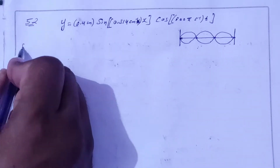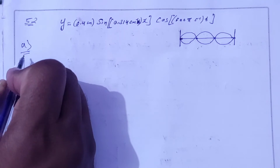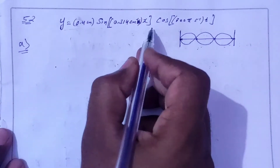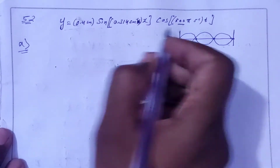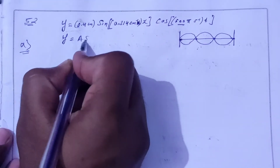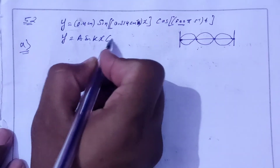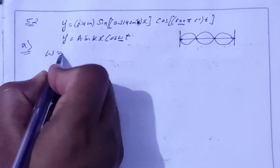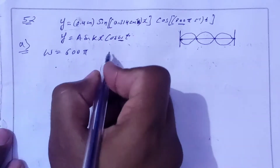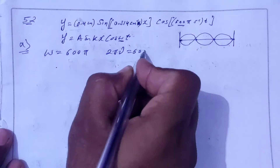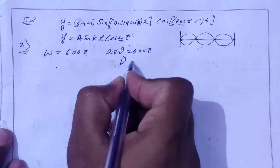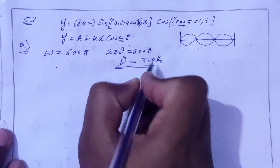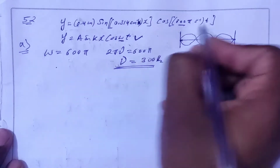First question: what is the frequency of vibration? For a standing wave we use the form y = A sin(kx) cos(ωt). Comparing, ω = 600π. Since ω = 2πf, we get 2πf = 600π, so frequency f = 300 Hz.